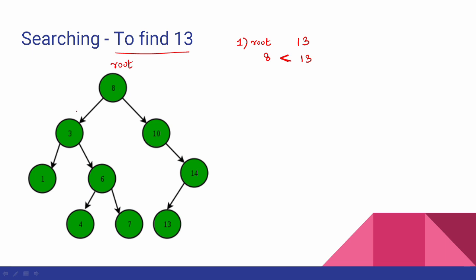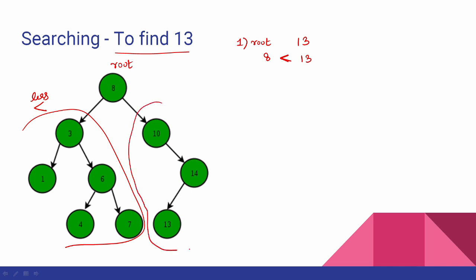We compare 13 with the root. Since 13 is greater than 8, we move to the right subtree. So we go to the right side. The right side has a value less than 13, so we need to move to the right side.